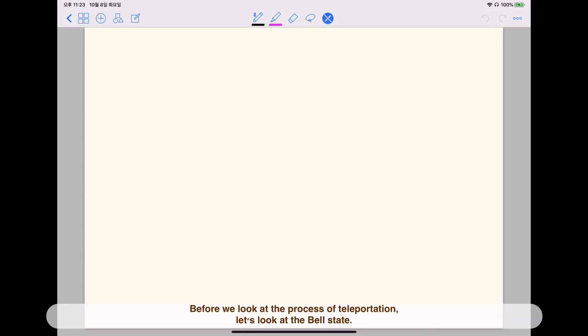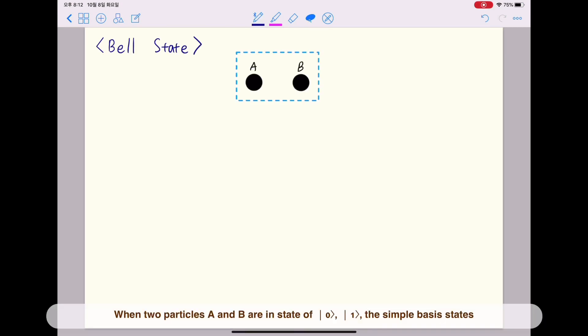Before we look at the process of teleportation, let's look at the base state. When two particles A and B are in state of 0 and 1, the simple base states that can be derived are four product states.